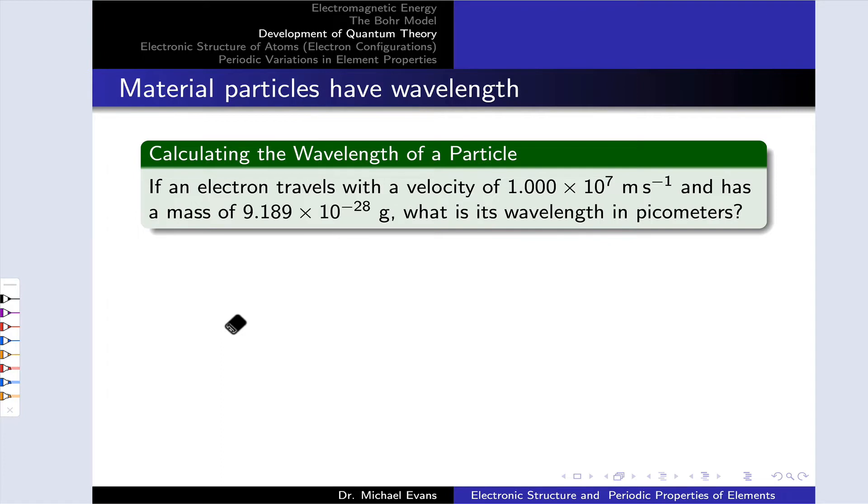To do this, we're going to apply the equation that we just saw. The de Broglie wavelength is equal to Planck's constant divided by the momentum of the particle, and we can express that momentum as mass times velocity of the particle.